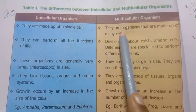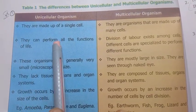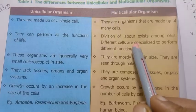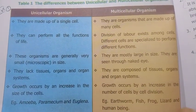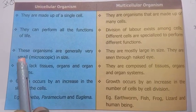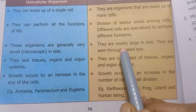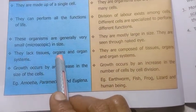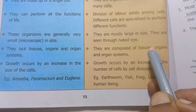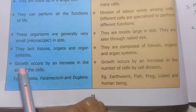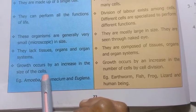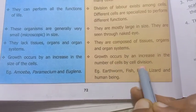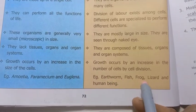Unicellular organisms can perform all the functions of life on their own; multicellular organisms have division of labour among cells — different cells perform different functions. Unicellular organisms are generally very small in size; multicellular organisms are large in size. Unicellular organisms lack tissues, organs and organ systems; multicellular organisms are composed of tissues, organs and organ systems. In unicellular organisms, growth occurs by increase in cell size — examples: Amoeba, Paramecium, Euglena. In multicellular organisms, growth occurs by increase in number of cells by cell division — examples: earthworm, fish, frog, lizard, and human being.